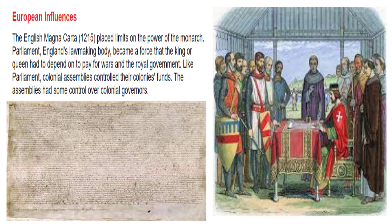European Influences. The English Magna Carta in 1215 placed limits on the power of the monarch. Parliament, England's lawmaking body, became a force that the king or queen had to depend on to pay for wars and the royal government. Like Parliament, colonial assemblies controlled their colonies' funds and had some control over colonial governors. Question four: How did the Magna Carta influence our Constitution? It placed limits on what the leader or monarch could do — a tradition that has continued for over 800 years. The concept that a leader's power could be limited is something England really started with the Magna Carta.